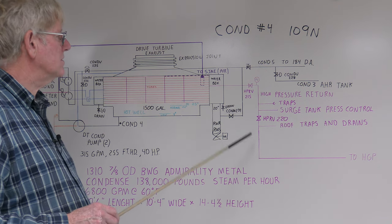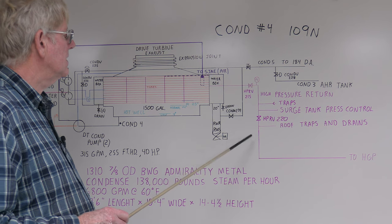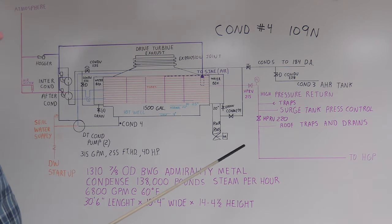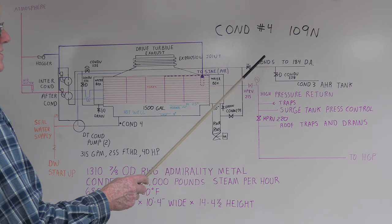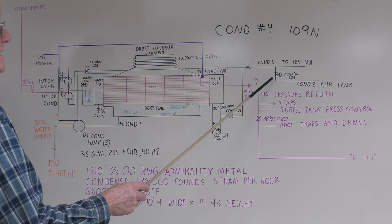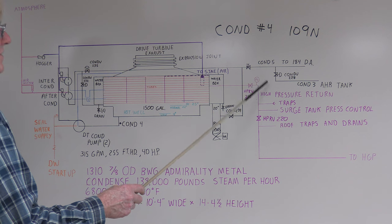Anybody knows more about high pressure return, please let us know. Up here, your condensate to 184 generator - there was a control valve that would open and dump that to Condensate 3 if you had a high generator level.